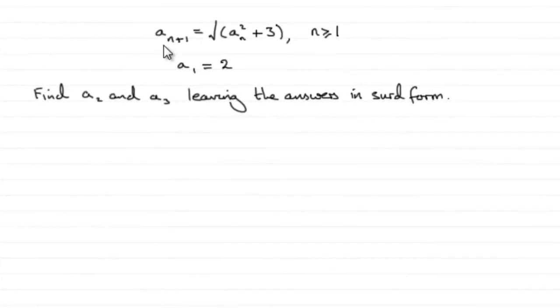Now in this question, we're given this sequence here and the starting value, the first value in the sequence, a1, which equals 2. We're asked to find a2 and a3, leaving the answers in surd form.